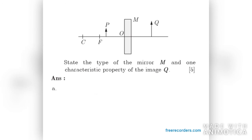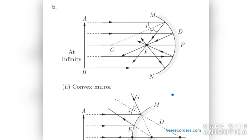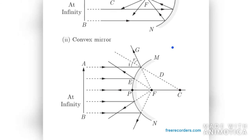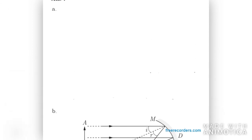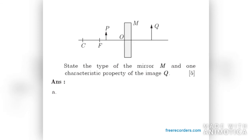In C part of question 30, you have to state the type of mirror M and one characteristic property of the image formed. In B part, you draw ray diagrams to show the principal focus of a concave mirror and a convex mirror. For the C part, the mirror is a concave mirror because the image is formed behind the mirror — the image will be virtual and erect as they are in the same direction. That's all for question number 30 and the end of the first sample paper.